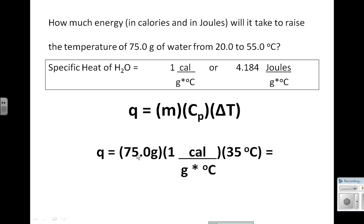75 grams—mass is still the same. 1 calorie per gram degree Celsius. And again, our units of measurement cancel out, and we are left with calories.